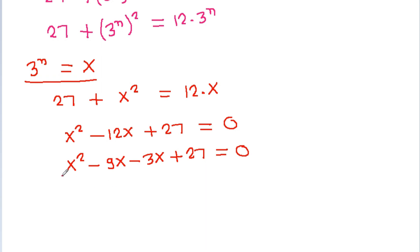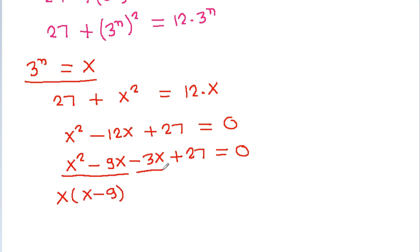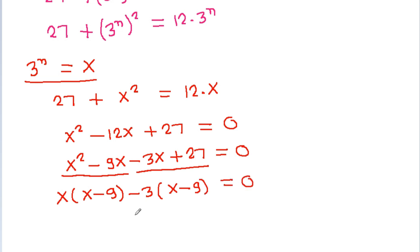Factoring: x squared minus 9x gives x times x minus 9, and minus 3x plus 27 gives minus 3 times x minus 9, so we have x minus 3 times x minus 9 is equal to 0.